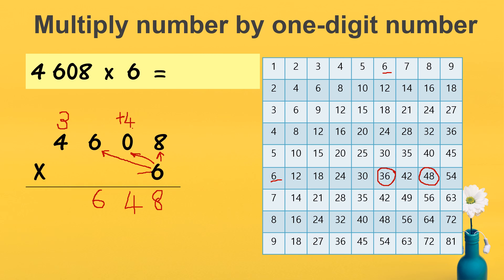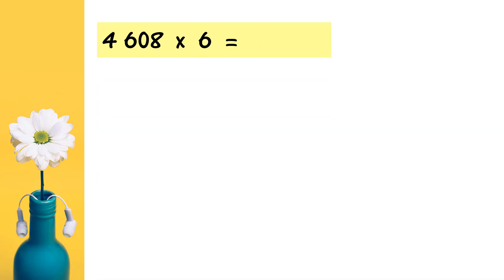And the last one: 6 times 4. You check the table — 6 times 4, I circle the number: 24. So now, 24 plus 3 is 27. I write 27.